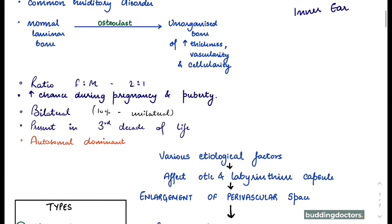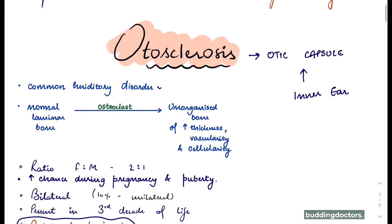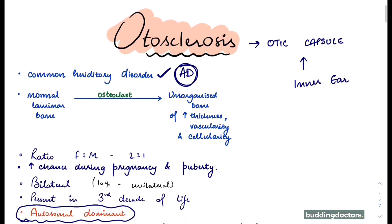Now we'll see about the etiology and pathogenesis of the disease. The ratio is more in females — it is two to one — and the chances of suffering from otosclerosis increase during pregnancy and puberty, because otosclerotic activity is more during this time. This disease is usually bilateral and presents in the third decade. Most importantly, it is autosomal dominant.